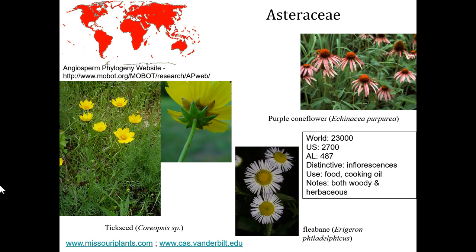The one distinctive feature of the Asteraceae is their inflorescence — a head made up of hundreds of flowers all compacted together into a very small space, as seen in fleabane, coneflowers, and coreopsis. These plants are found throughout the world. Another key feature is the involucre associated with the capitulate head — a bunch of bracts that come underneath the inflorescence. The fruits are almost always achenes — think of sunflower seeds.